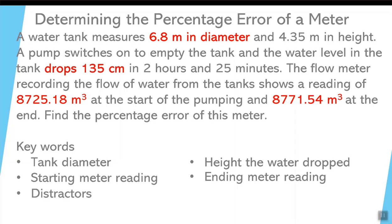There's some distractors in this initial information. The first distraction is the height of the tank, 4.35 meters in height. Again, it doesn't tell you if that tank is completely full or completely empty, but the information does say that the water dropped 135 centimeters or 1.35 meters in that time period. This 4.35 meters in height, that's a distractor, we can get rid of that.